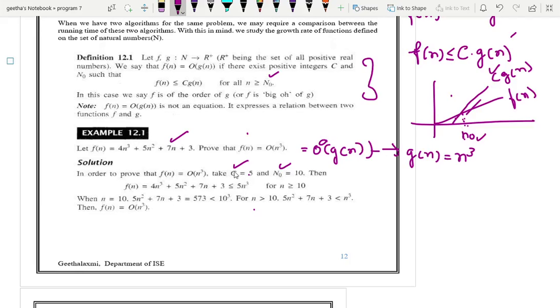That value is 5 and n naught will be 10. There can be other c value also. You can apply the value for n for these functions and c into g of n and you can find out. There may not be always one solution, c can be changed or n naught can be changed. If c can be changed, there is a possibility that n naught also can change. Now, we have considered c as 5 and n naught is 10.